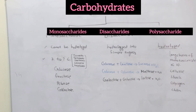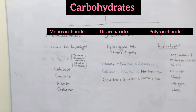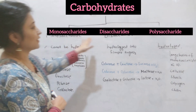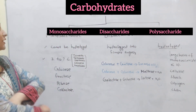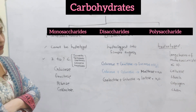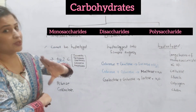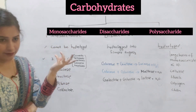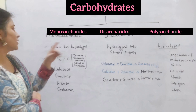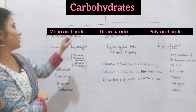Now we will discuss carbohydrates. Carbohydrates are the main source of energy. The classification of carbohydrates: carbohydrates are classified as monosaccharide, disaccharide, and polysaccharide. Saccharide means sugar, so not all carbohydrates are sweet in taste like sugar — generally we call carbohydrates sugars, but not all sugars are sweet.